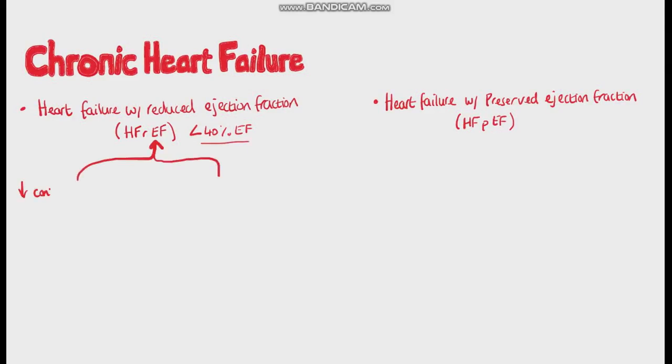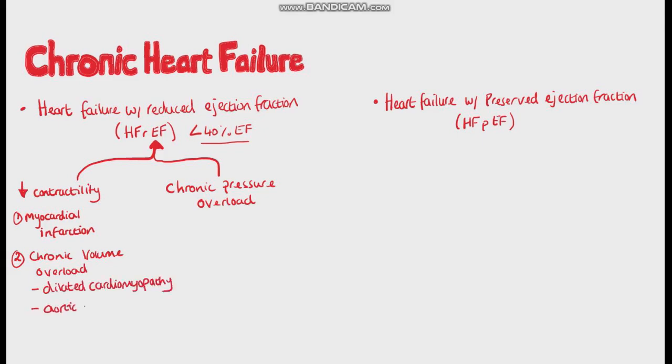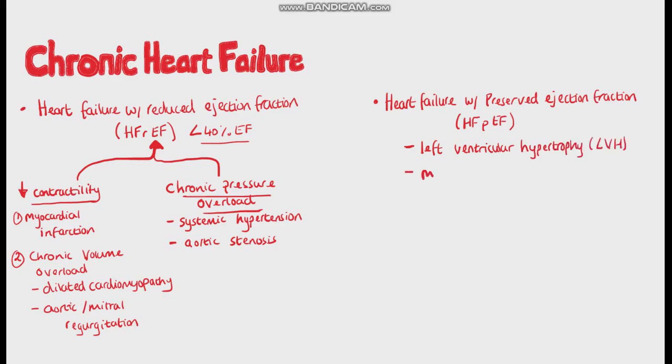Examples of heart failure with a reduced ejection fraction include a decrease in contractility like myocardial infarction, chronic volume overload from mitral regurgitation or aortic regurgitation or dilated cardiomyopathies. You can also have it from chronic pressure overload so from an advanced aortic stenosis or uncontrolled hypertension. Heart failure with a preserved ejection fraction comes from impaired diastolic filling seen in left ventricular hypertrophy, myocardial fibrosis, restrictive cardiomyopathy, pericarditis or constriction from tamponade, as well as valvular disease like mitral stenosis.